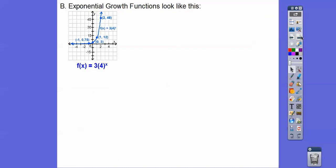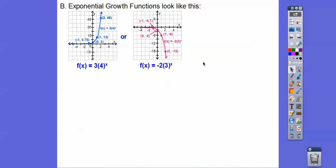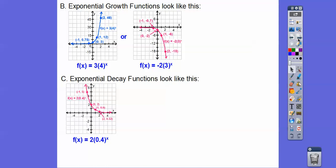So exponential growth functions from yesterday look like this. It just depends on if a is positive or a is negative. So when it's positive, it shoots up like a j-curve, looks like a j. And when a is negative, it shoots down. So it's a reflection over this axis. When it's negative, it just reflects it down. Notice b is greater than 1. When b is greater than 1, here it is 4. Here b over here is 3. When it's greater than 1, it's an exponential growth function. When it's less than 1, it's a decay function.